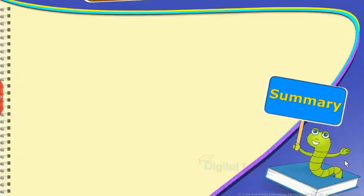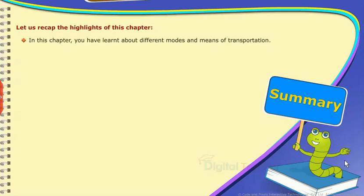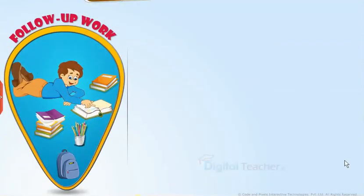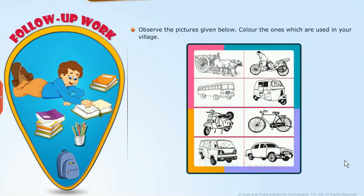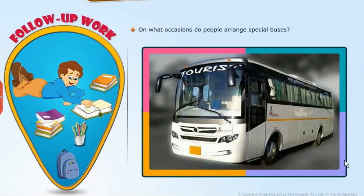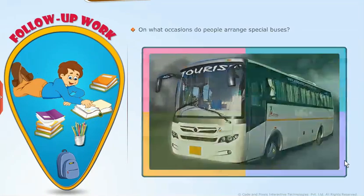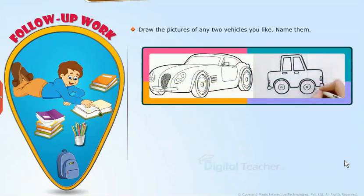Summary: Let us recap the highlights of this chapter. In this chapter, you have learnt about different modes and means of transportation. Let's take up the following activities: Observe the pictures given below and colour the ones which are used in your village. On what occasions do people arrange special buses? Draw the pictures of any two vehicles you like and name them.